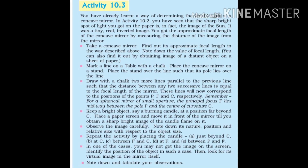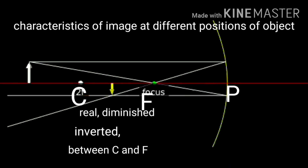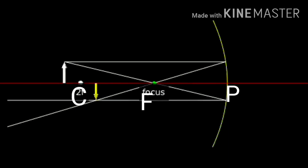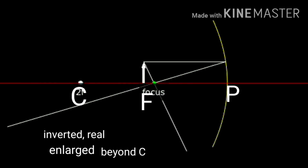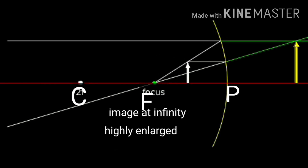Take a concave mirror and find its approximate focal length as studied earlier. Place the concave mirror on a stand and mark a line on a table. Place the stand over the line and mark F, P and C on the line. Keep an object at a position far beyond C. Place a paper screen and move it in front of the mirror till you get a sharp bright image of the object on it. Note down the nature, position and size of the image. Repeat the activity by placing the object just beyond C, at C, between F and C, at F, and between P and F.